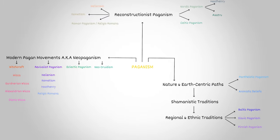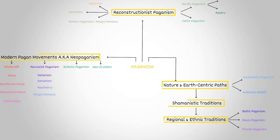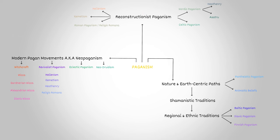We can broadly classify Paganism into five main categories. While all Pagan paths fall into at least one of these categories, some can overlap and fall into two, three, or even more. The five categories are Reconstructionist Paganism, Neopaganism, Nature and Earth-centric paths, Regional and Ethnic Traditions, and Shamanistic Traditions.